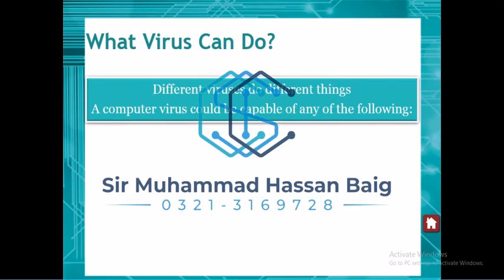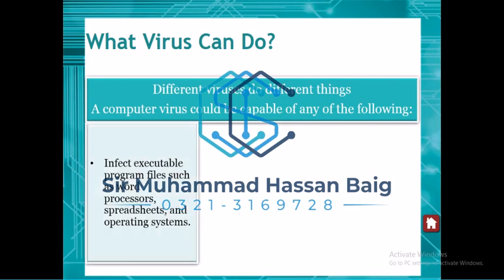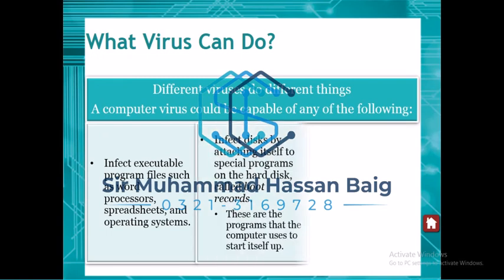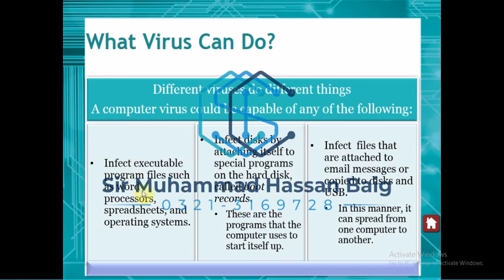Different viruses have different capabilities, but normally there are three things a virus can do. First, it can infect executable files — your .exe files like word processors such as MS Word, spreadsheets like MS Excel. Second, it can infect your operating system. Operating systems are software used to run your system — we use Windows 7, Windows 8, Windows XP, Windows 10 on computers, and Android, iOS, or BlackBerry on mobile.